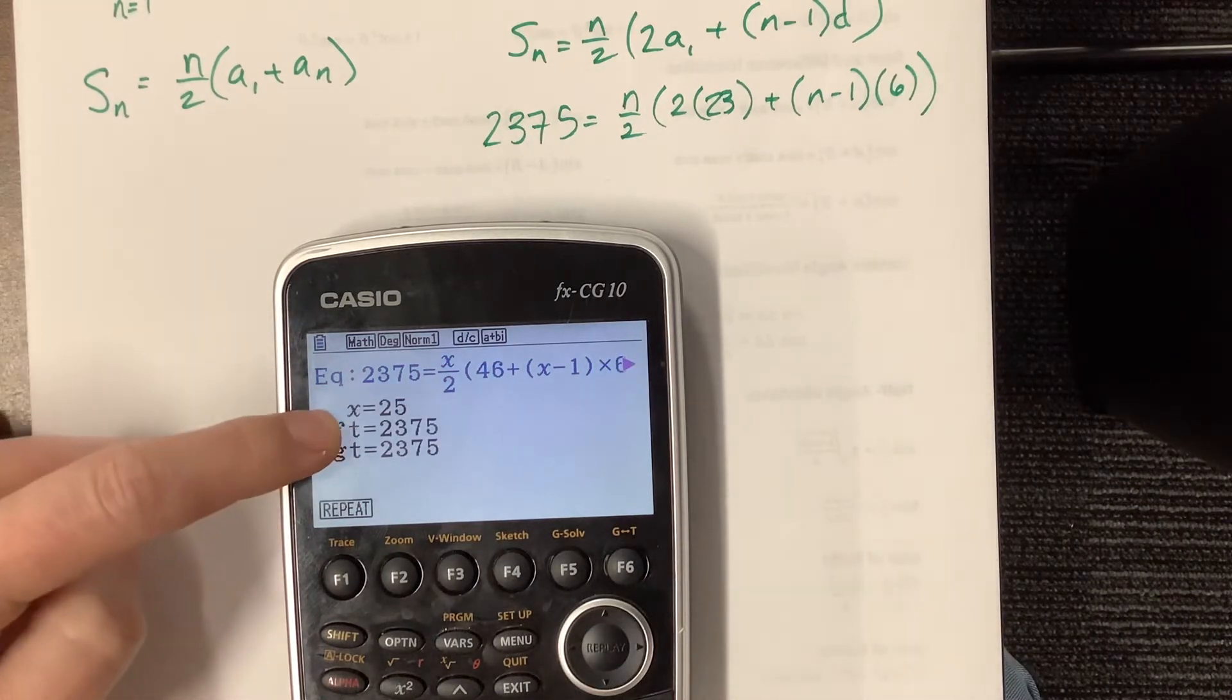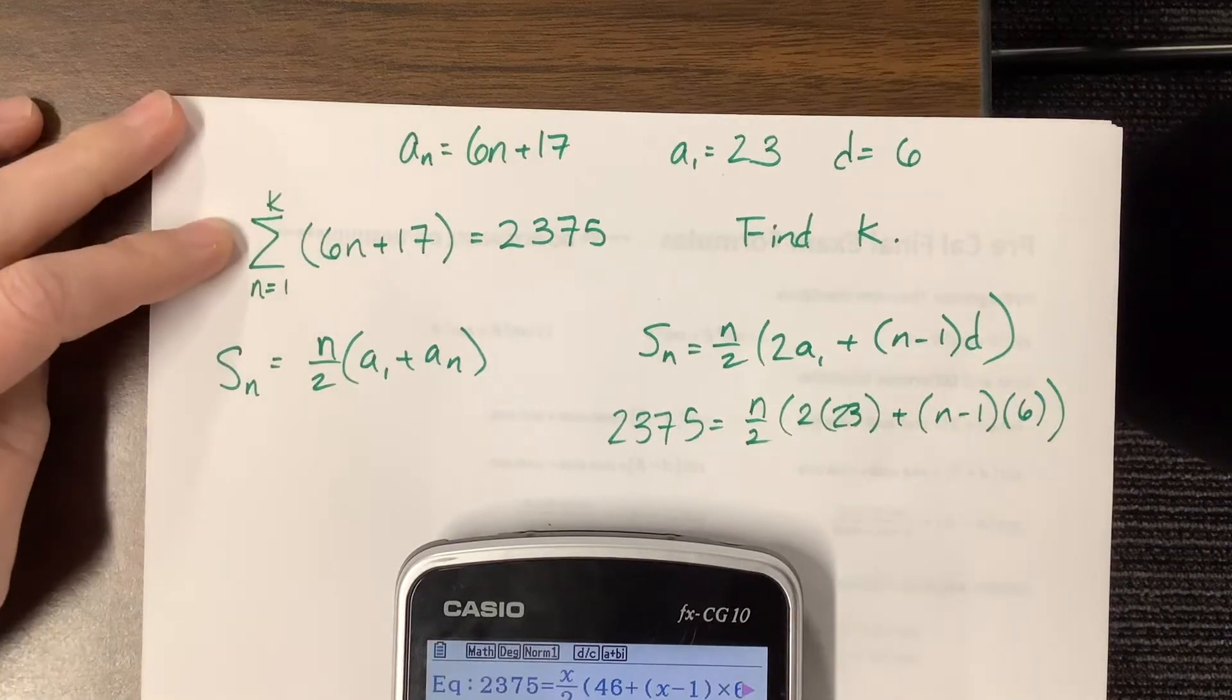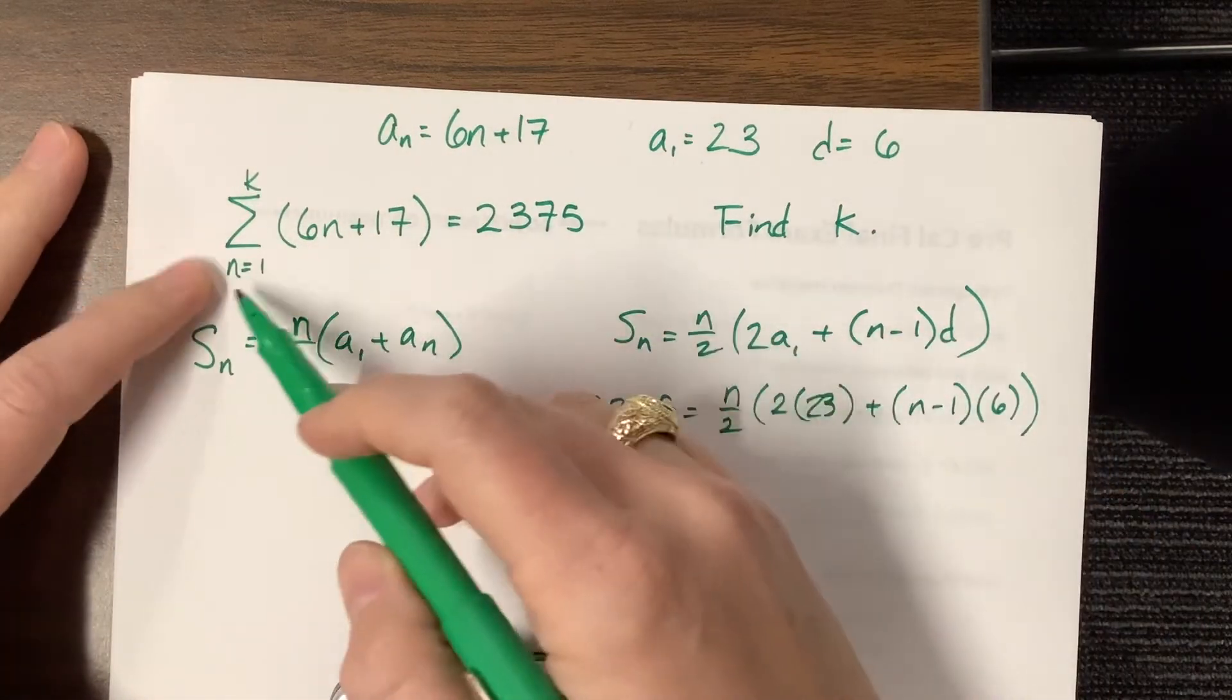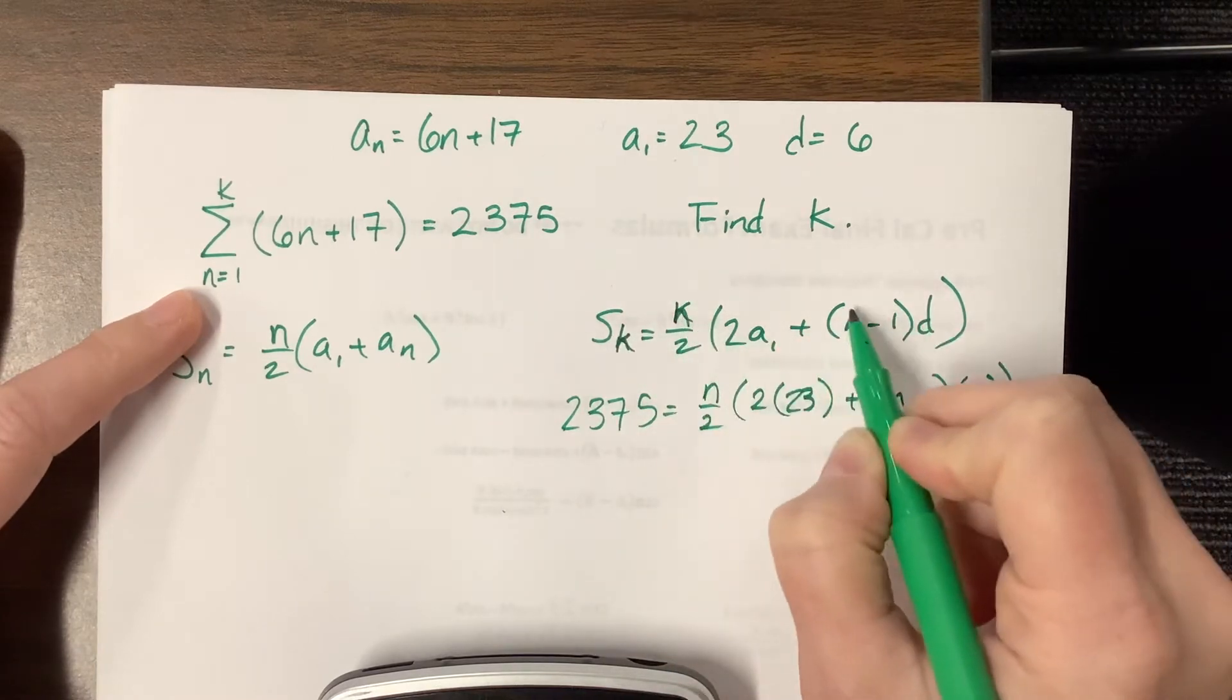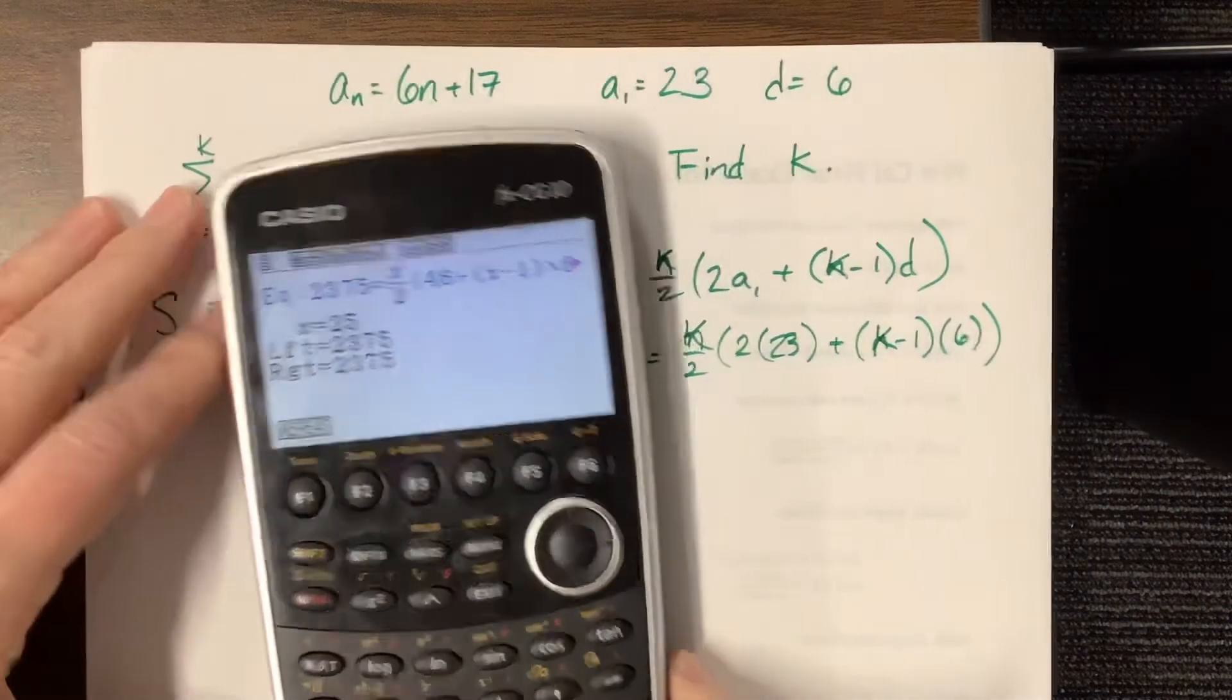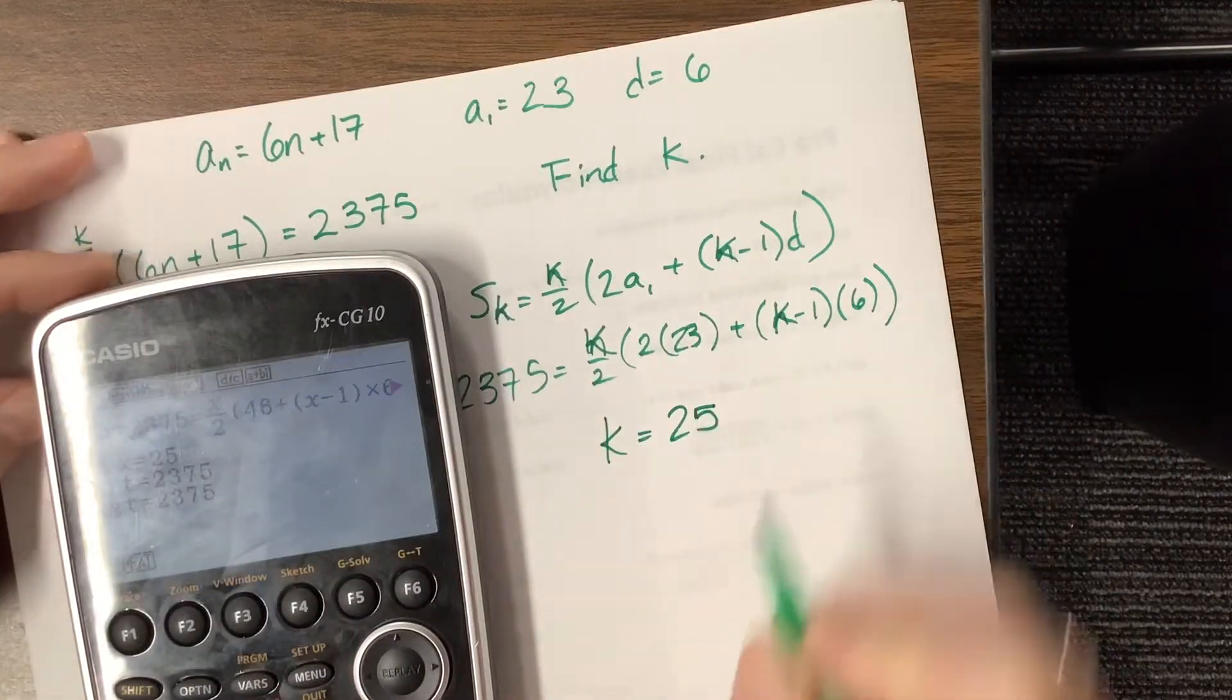So we found our x value, which in our case is n, or in this case, it's really k is what we're solving. Sorry that we have so many different letters. But my calculator, I need to use x. So we're kind of out of luck on that one. But what we find is that k is equal to 25.